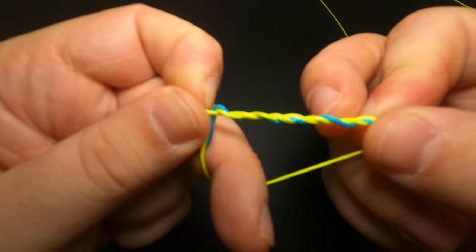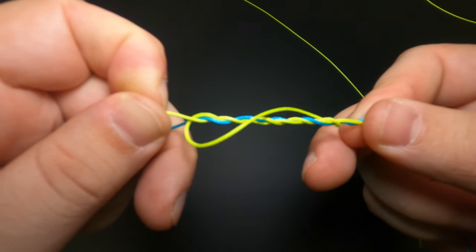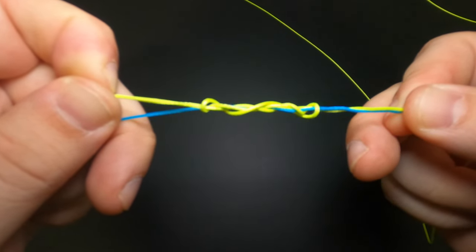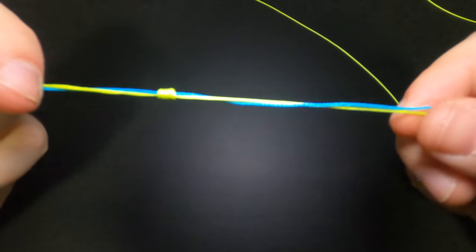Once again we'll lubricate this stretch here, just like that. And then just like we did on the other side, we'll go ahead and start cinching the Uni knot down on this side. Just like that.